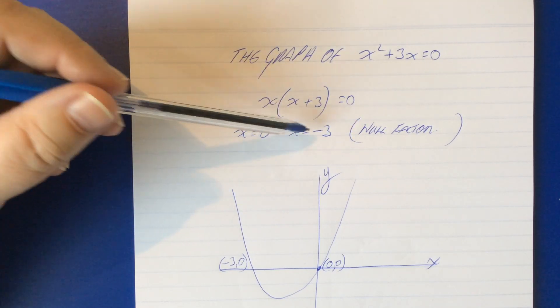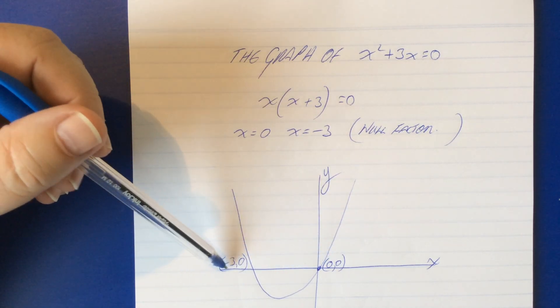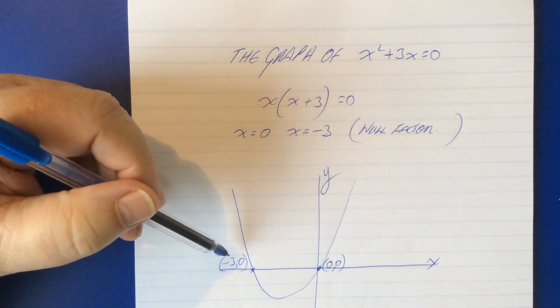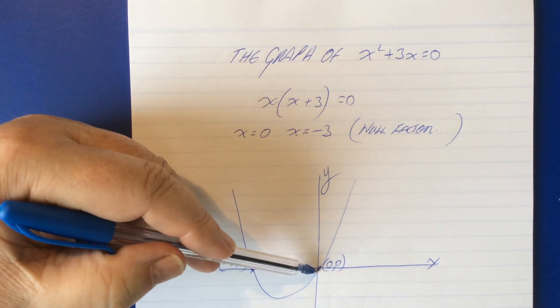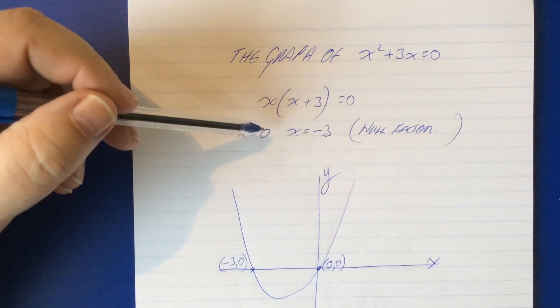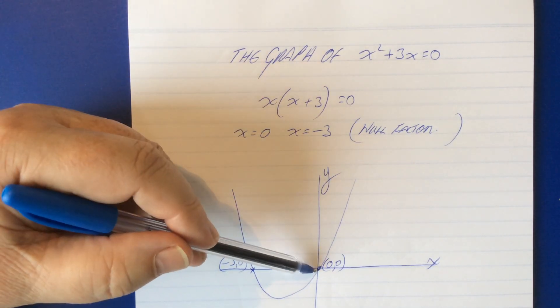So we can take that information and pop it onto a rudimentary graph immediately and we have two points of intersection here and here on the x axis and coincidentally this is also the intersection of the y axis because if x equals zero y will equal zero in this case.